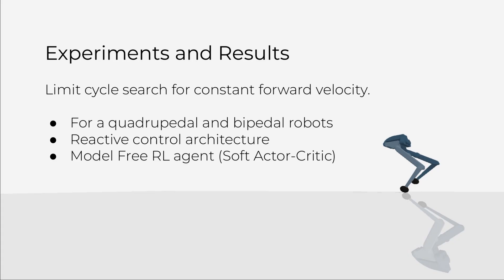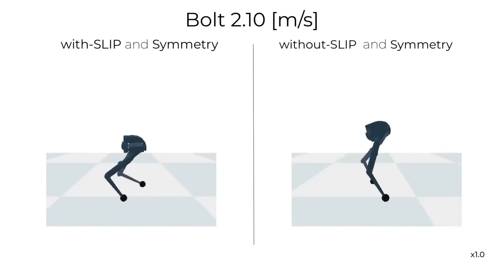We tested our approach on a quadrupedal and bipedal robot, learning a reactive control policy that used proprioceptive information of a single time step to produce joint torque commands.